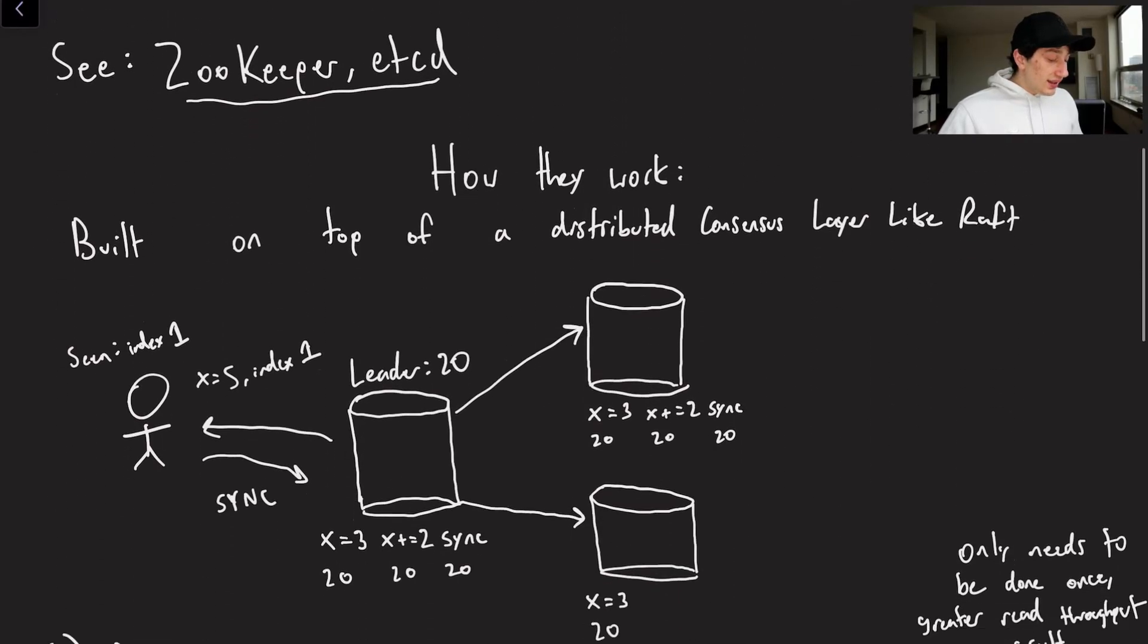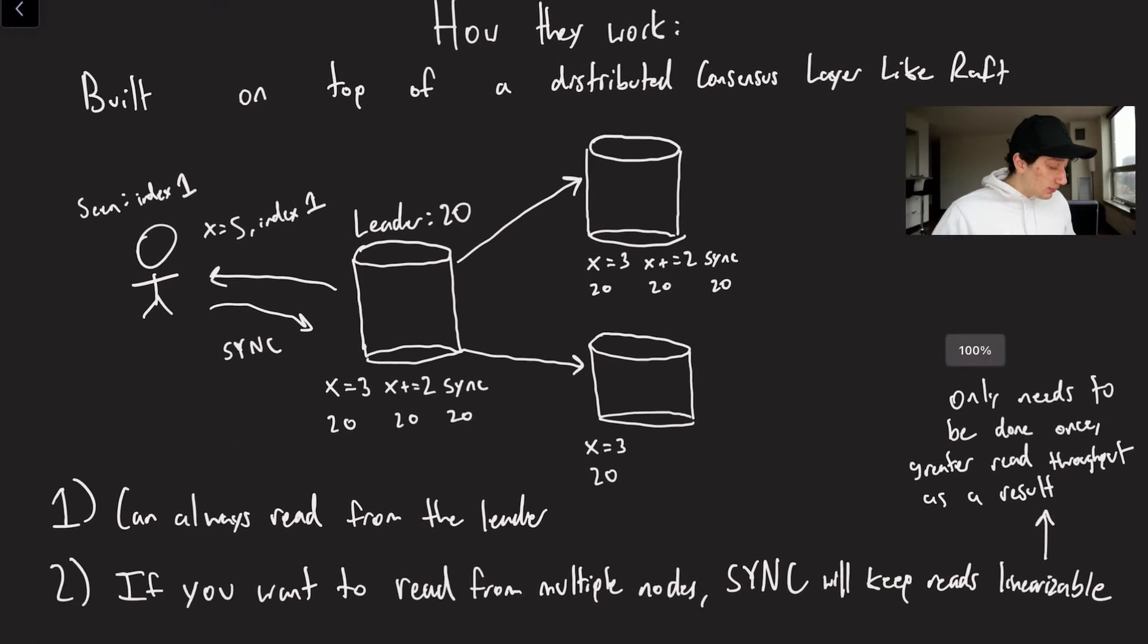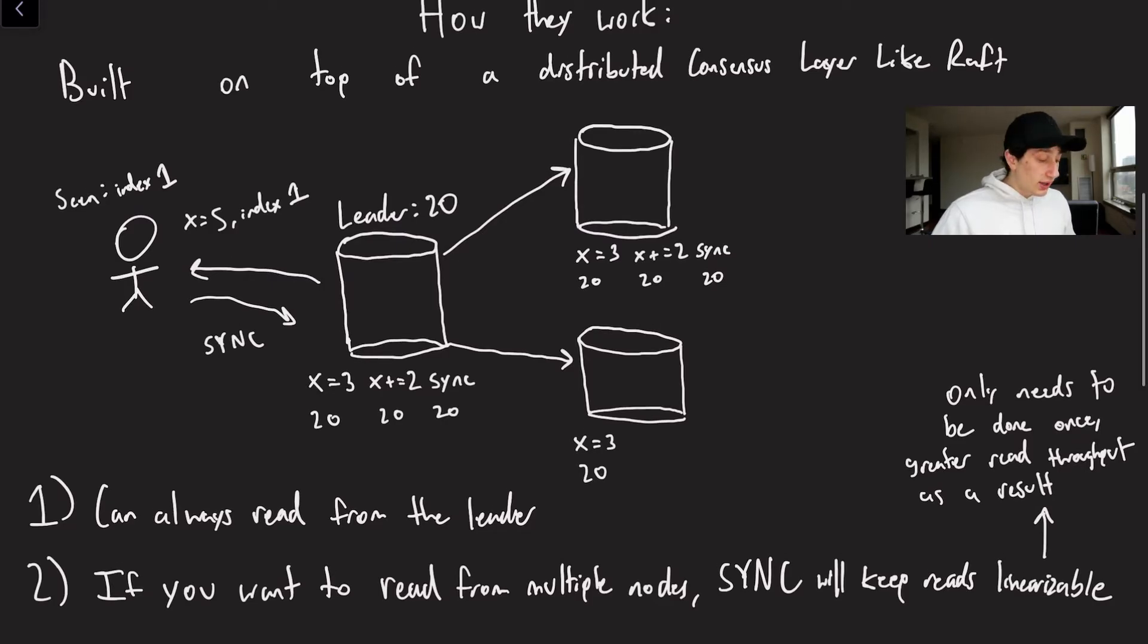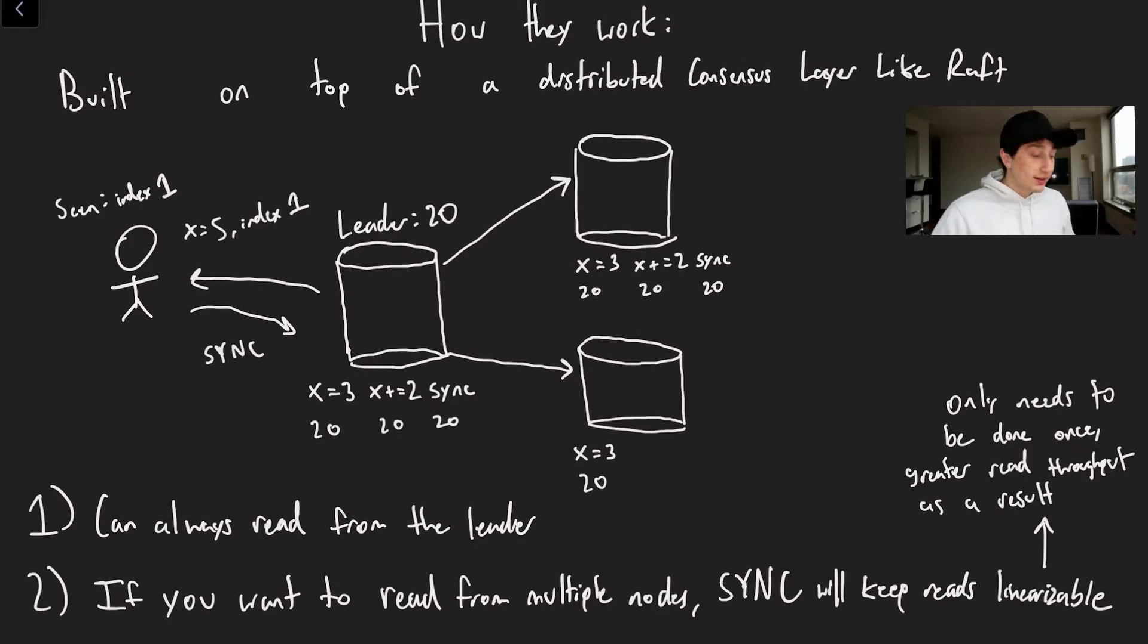So if there is any technical content in this video, it would basically just be how reads work, because we've covered how writes and leader election work in consensus. But how will we actually read the data to make sure that we're getting linearizable reads? Because if I were to write a piece of data and then not be able to read it right after from some replica, that would be problematic.